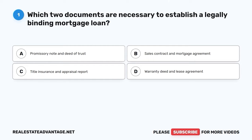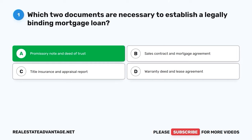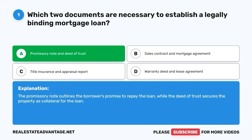Question 1. Which two documents are necessary to establish a legally binding mortgage loan? A. Promissory Note and Deed of Trust. B. Sales Contract and Mortgage Agreement. C. Title Insurance and Appraisal Report. D. Warranty Deed and Lease Agreement. The correct answer is A: Promissory Note and Deed of Trust. The promissory note outlines the borrower's promise to repay the loan, while the deed of trust secures the property as collateral for the loan.